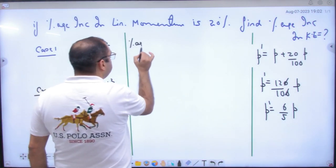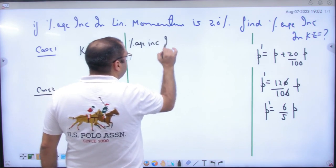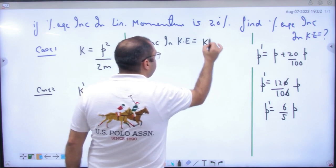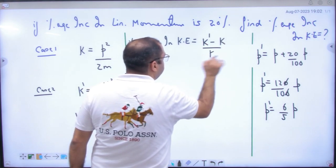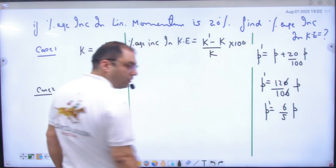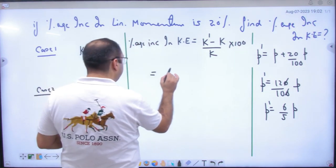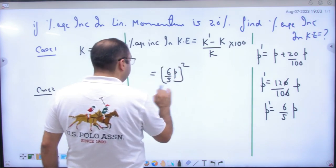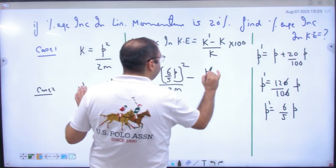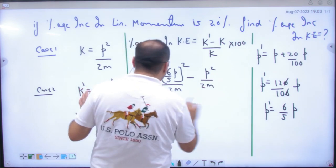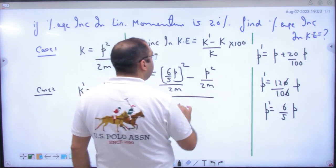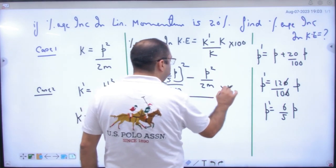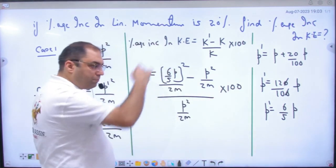Nahi kinetic energy aa gai. Aapko kya nikalna hai? Percentage increase in kinetic energy will be equal to new kinetic energy k dash minus original upon k into 100. K dash ki value hum nikal chuke, six upon five into p ka square by 2m. Purani kinetic energy hume pata hai, p square by 2m.